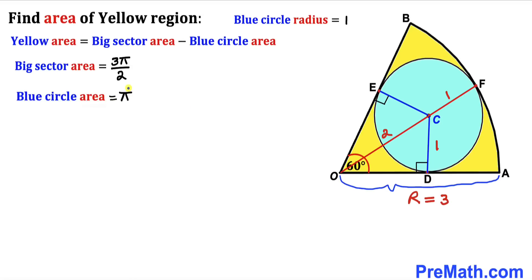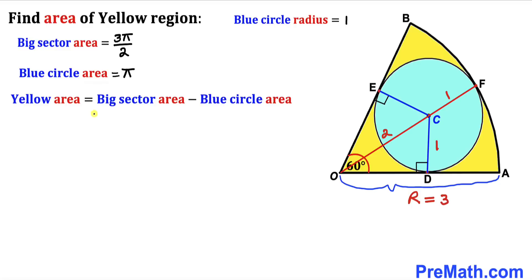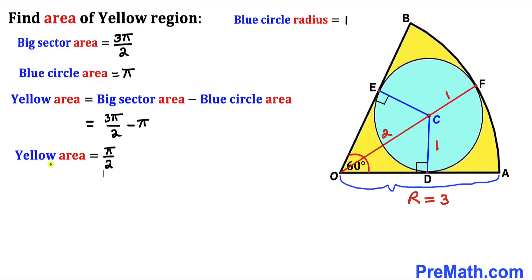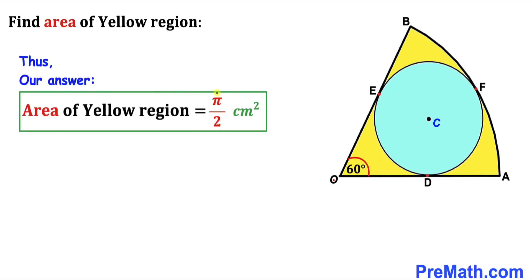The area of the blue circle is π. Substituting into our equation: yellow area = big sector area − blue circle area = 3π/2 − π = π/2. Therefore the area of the yellow region is π/2 centimeter square.